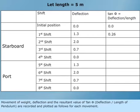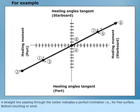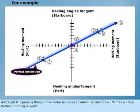Movement of weight, deflection and the resultant value of tan phi or deflection divided by length of pendulum are recorded and plotted as follows for each movement. A straight line passing through the center indicates a perfect inclination, i.e. no free surface, bottom touching or wind.